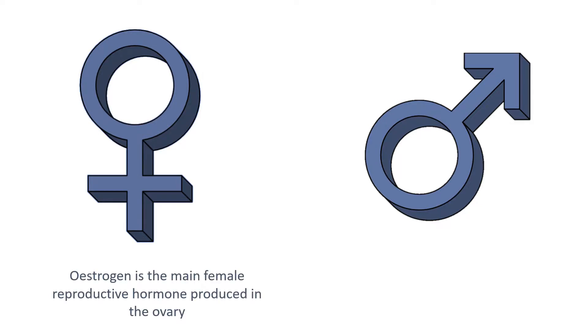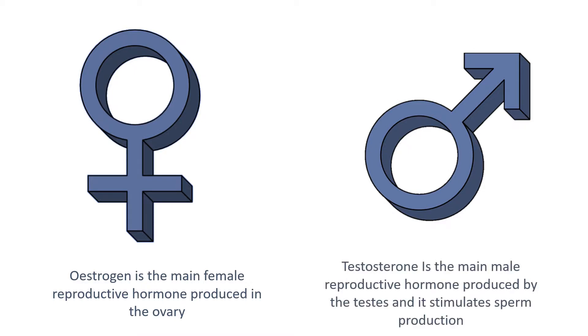During puberty, reproductive hormones cause secondary sex characteristics to develop. Estrogen is the main female reproductive hormone and is produced in the ovary. Testosterone is the main male reproductive hormone, produced by the testes, and it stimulates sperm production.